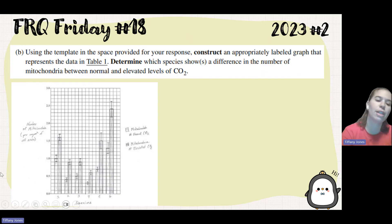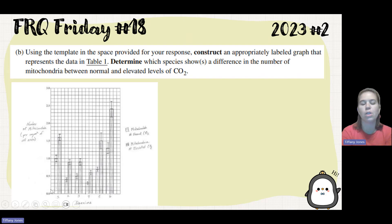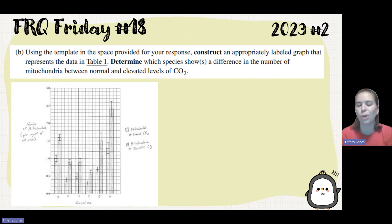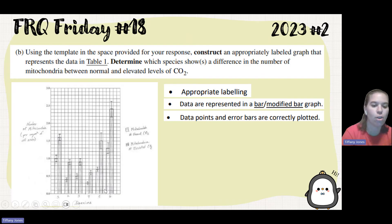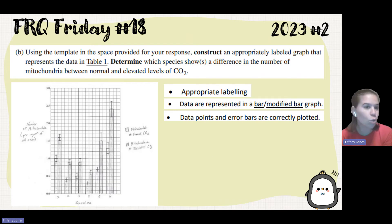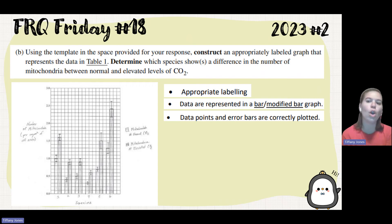The graph should have axes labeled: number of mitochondria on the y-axis and species on the x-axis. Make sure to include a key to identify which bars are which, and plot all data points and error bars correctly. College Board has been pre-labeling axes on some questions to help with graphing. If you're running short on time, just label your axes and make part of the graph so they know what kind of graph you're making — that can still earn you some points.